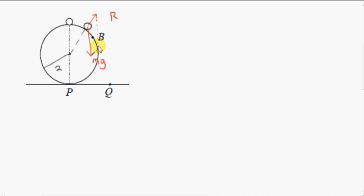Let's look at the resultant force vector — we just sum the two vectors. We are not dealing with uniform circular motion here; we're dealing with non-uniform circular motion. As I explained in the previous video, the resultant force vector will not point towards the center of the circle, but it will have a component along the radius line whose magnitude is the same as if the particle were moving with constant speed V on the circle.